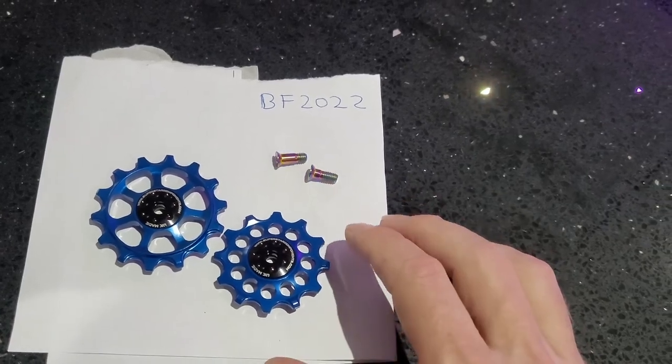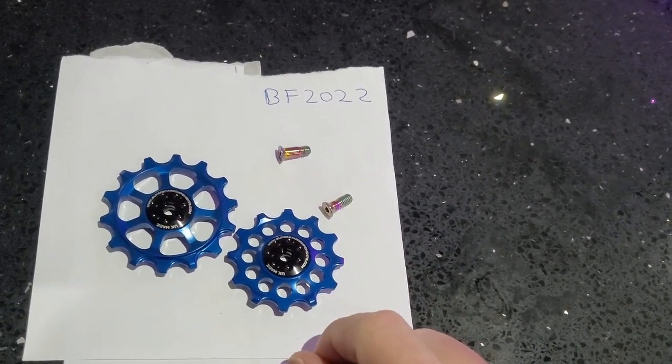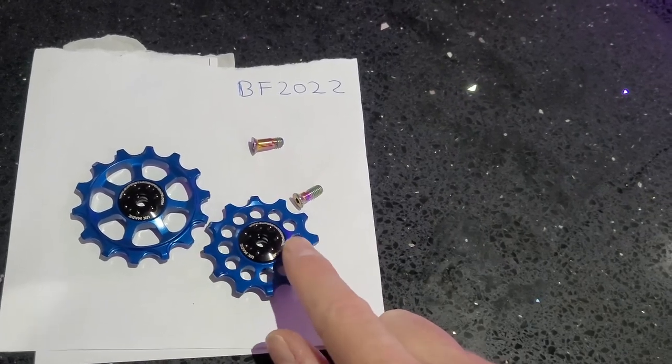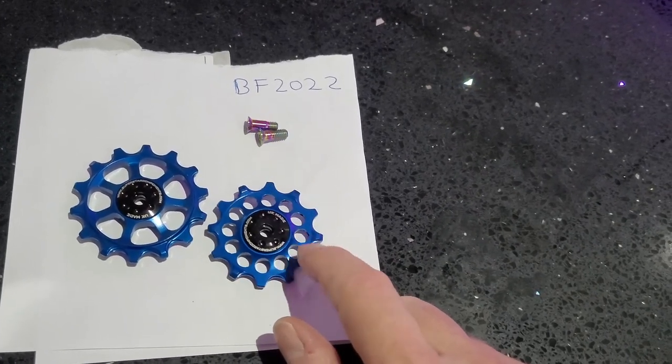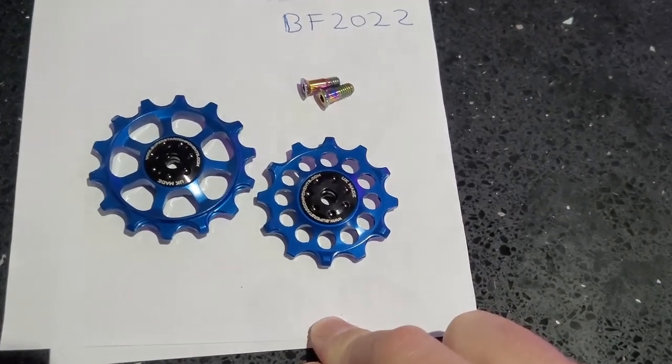If you're looking for jockey wheels for an Eagle system, and you want to put a bling on your bike, you want to replace the plastic jockey wheels that are on there, Superstar Components do ship abroad, obviously there's a charge to that, but a great place to get your jockey wheels from.